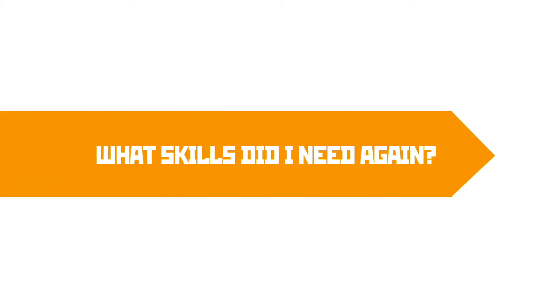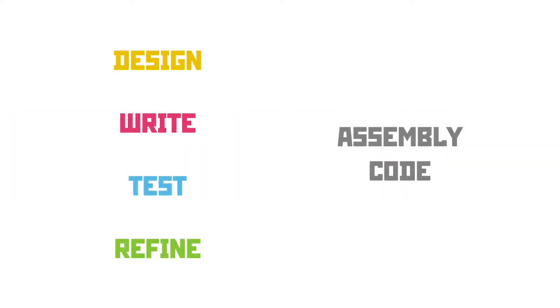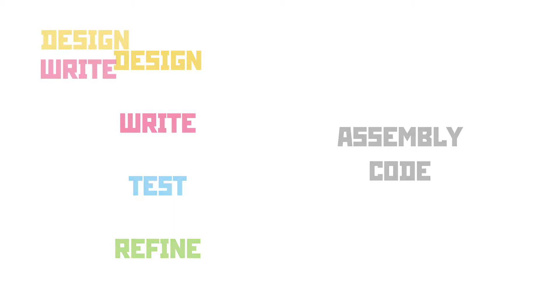Back at the start, I listed a series of skills you needed to be able to do with assembly code instructions in order to pass the assessment. These were to design, write, test, and refine the assembly code. Design and write can be grouped together because they're a very similar skill. There's some argument that they could ask you to design assembly code using something like a flowchart, but I think that's less likely than asking you to actually write a program from scratch.